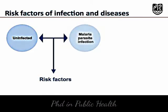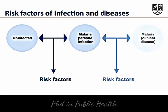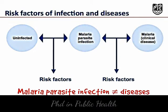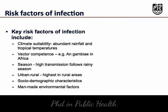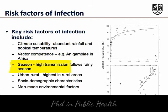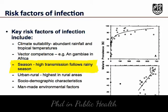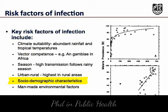We will now focus on the common risk factors of acquiring a malaria parasite infection, as well as the risk factors of malaria disease. It is important to note that malaria parasite infections do not always lead to clinical disease. Key risk factors of infection include climate suitability in the form of abundant rainfall and tropical temperatures, vector competence, seasonality with a high transmission season typically following the rainy season, urban and rural residency with rural populations at the highest risk, as well as socio-demographic characteristics and man-made environmental factors.